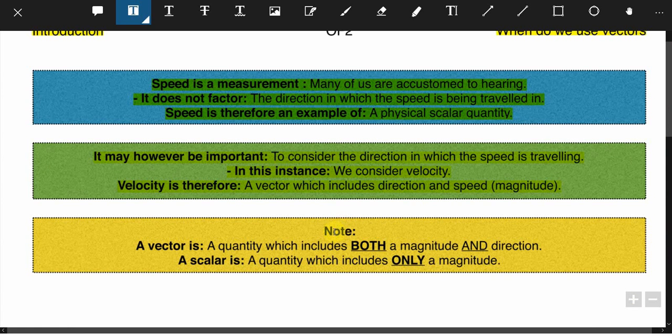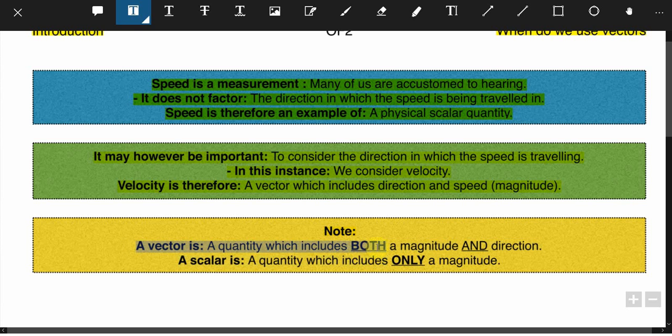A final note is just a recap of this very short video: a vector is a quantity which includes both a magnitude and a direction, and a scalar is a quantity which includes only a magnitude.